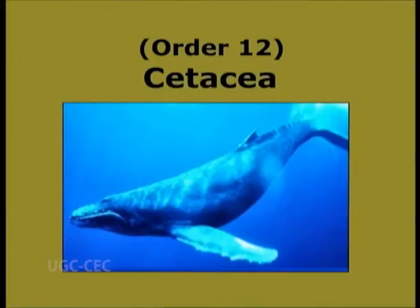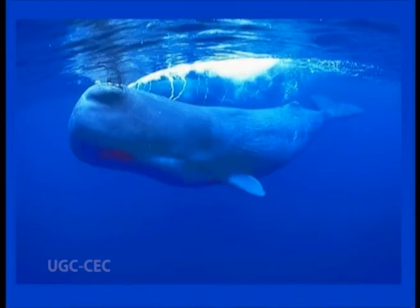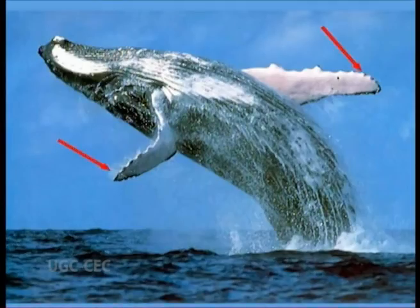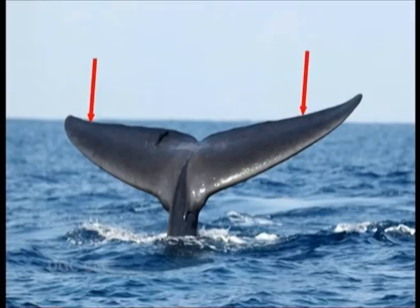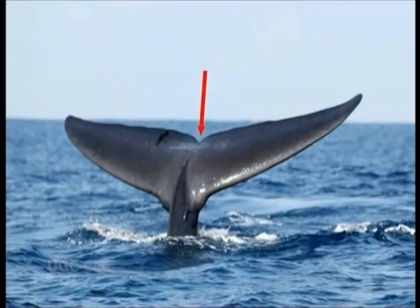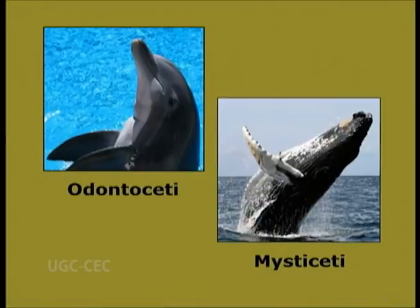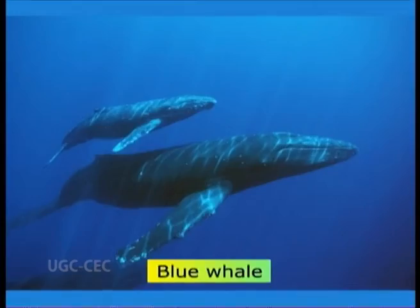Order 12: Cetacea. Cetus meaning a whale. They are large marine fish-like mammals, well adapted for aquatic life. Pectoral limbs are modified into broad paddle-like flippers. The tail is subdivided into two broad horizontal fleshy flukes with a notch used in propulsion. No claws, no hind limbs, and no external ears are present. Living cetaceans are divided into Odontoceti (toothed whales) and Mysticeti (baleen whales). Examples are blue whale, sperm whale, etc.